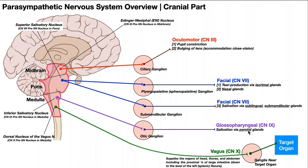Collectively, the parotid, sublingual, and submandibular glands make up the three extrinsic salivary glands. The fourth cranial nerve with parasympathetic function — and this is what most people think of when they think of parasympathetic — is the vagus nerve. The vagus nerve has control over a much larger area than the others.